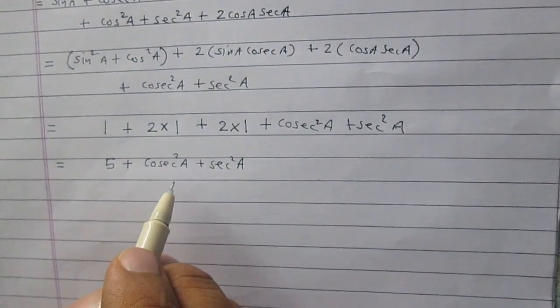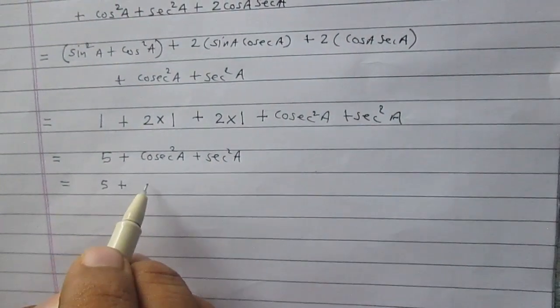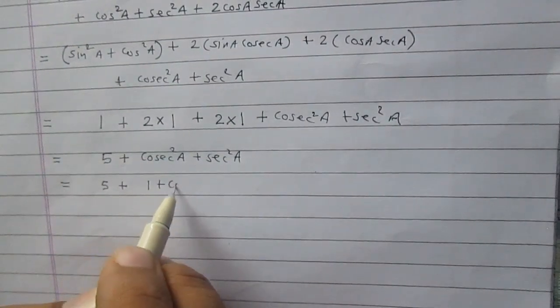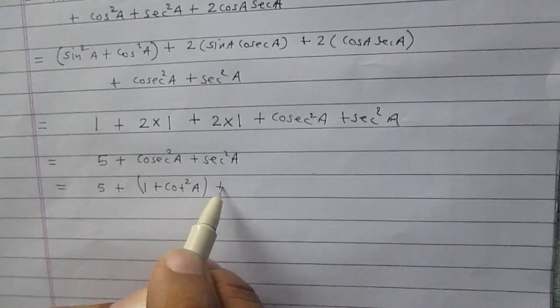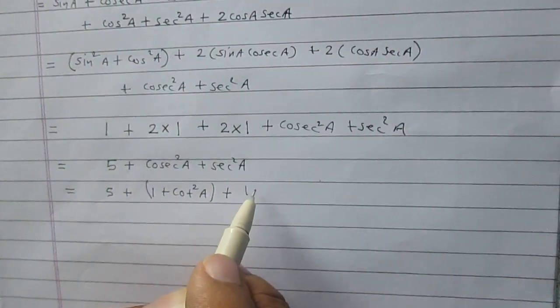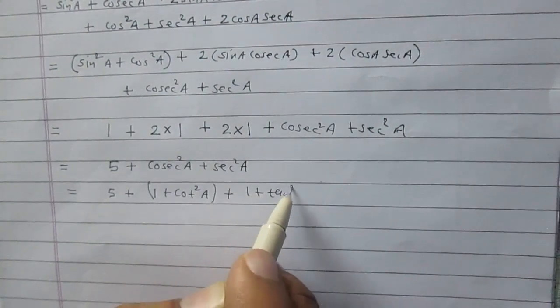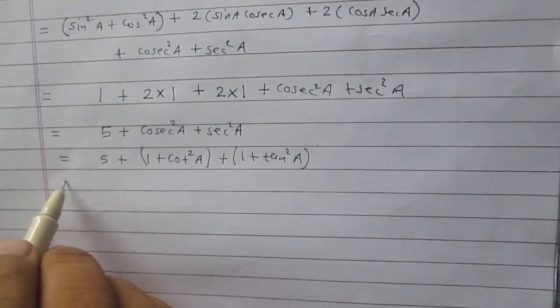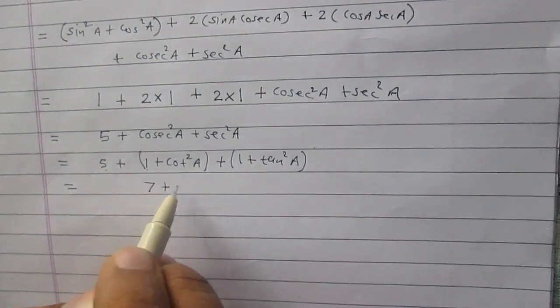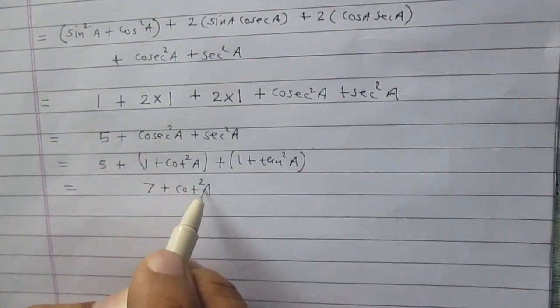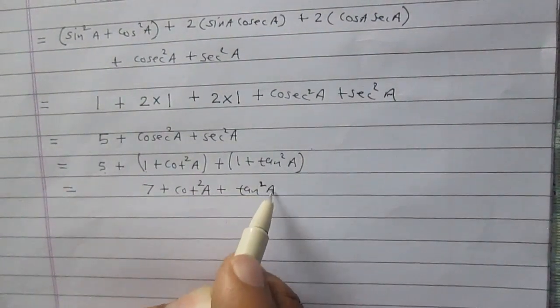Now, according to the trigonometric identities, I can write cosec square a as 1 plus cot square a, and sec square a as 1 plus tan square a. So the result is 5 plus 1 plus 1, which is 7 plus cot square a plus tan square a.